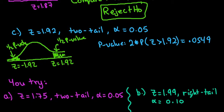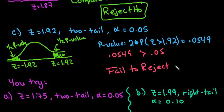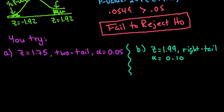If I compare my two values, 0.0549 compared to 0.05 is greater than, so we would fail to reject the null hypothesis. At this point, I want you to try two on your own to make sure you understand. Go ahead and pause the video, try both of these, and then resume watching to make sure you did it correctly.